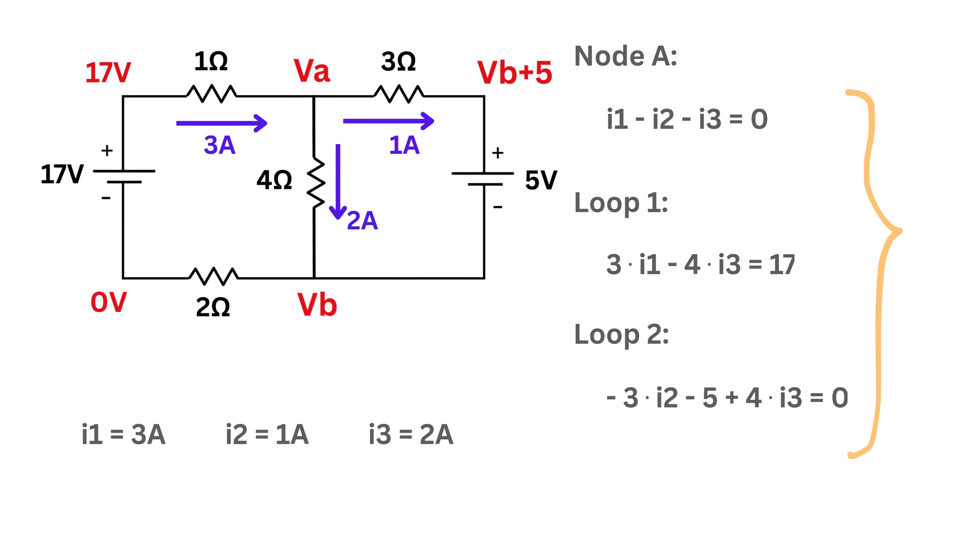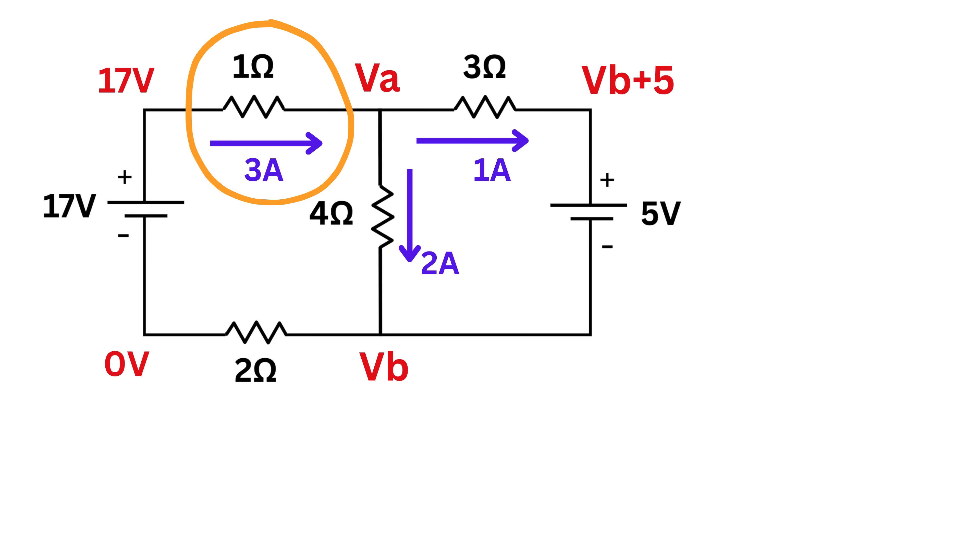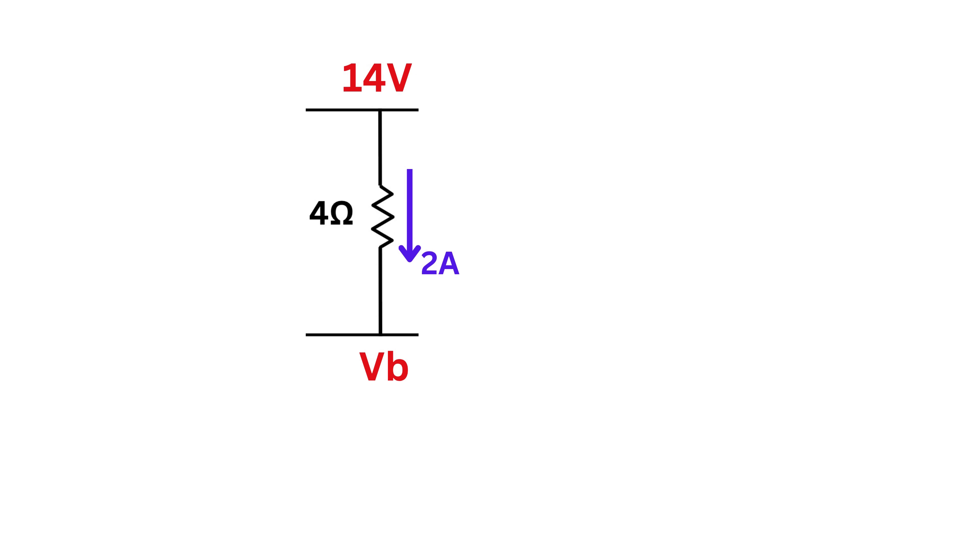So what will be the voltage drop across this 1 ohm resistor? It will be 1 times i1 or 3 volts, right? So this 17 volts minus the voltage at node A or Va will be equal to 3. Thus Va equals 14 volts. Then look here, voltage drop across this 4 ohm resistor will be 4 times i3 or 8 volts, right? So this Va or 14 minus the voltage at node B or Vb will be equal to 8. Thus Vb equals 6 volts.